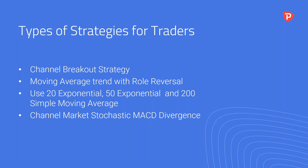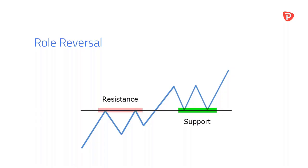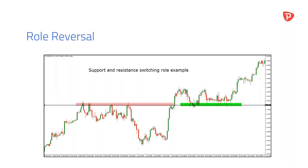Some trading strategies to consider: channel breakout strategies, moving average trends with role reversal — which is a good one. When moving averages and a role reversal coincide at the same point, they become stronger zones. Indicators are worth looking at, but consider starting with a naked chart: just price, your key support/resistance drawn up, and then bring in indicators like stochastic, MACD, and RSI. Check out Pepperstone's YouTube for more on role reversal. It's one of the things we cover extensively in our course.